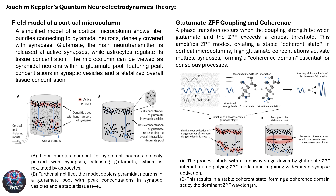In electromagnetic consciousness, the brain's micro-columns function as fundamental units that generate local electromagnetic fields. This focuses on how glutamate-ZPF coupling plays a critical role in this process. In part A, the runaway stage is driven by glutamate interactions with the ZPF, amplifying specific field modes that create localized electromagnetic fields, necessitating widespread synaptic activation across the micro-column. In part B, the resulting coherence domain forms a stable electromagnetic state, synchronizing neural activity across multiple micro-columns. These domains are thought to be crucial for conscious experiences, suggesting that consciousness emerges from the synchronization of localized electromagnetic fields. The coupling strength between glutamate and the ZPF, along with the formation of these coherence domains, highlights the importance of electromagnetic interactions in generating and maintaining conscious states.